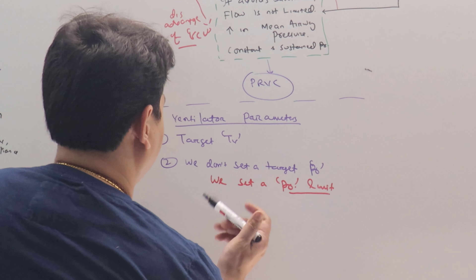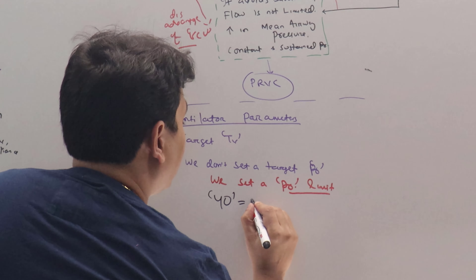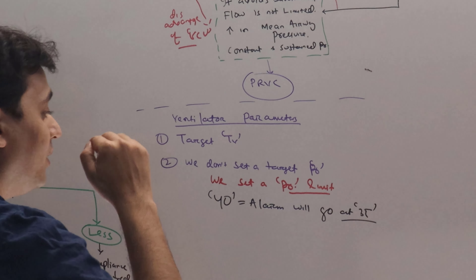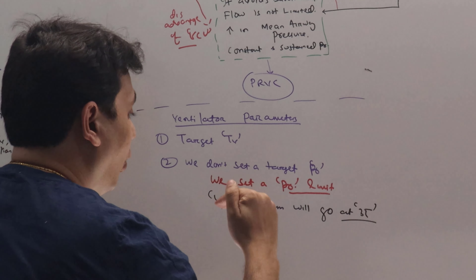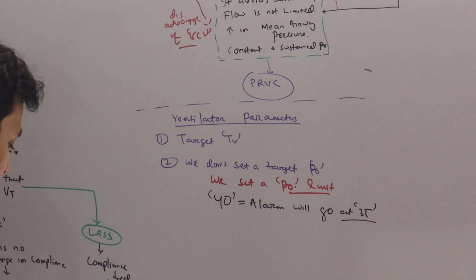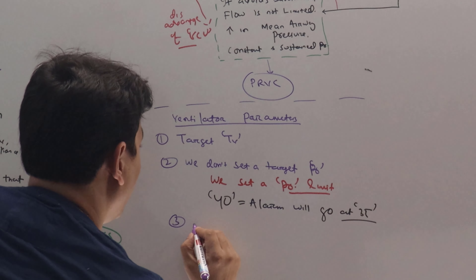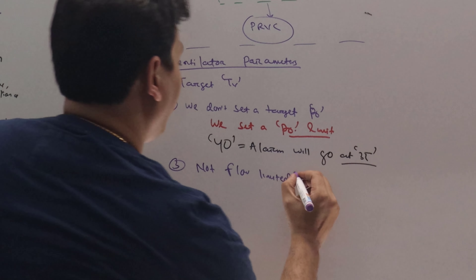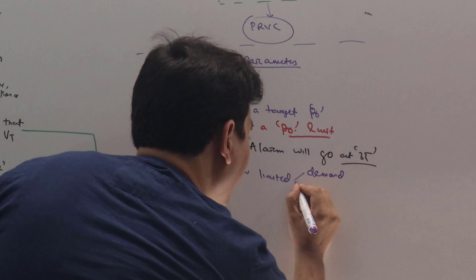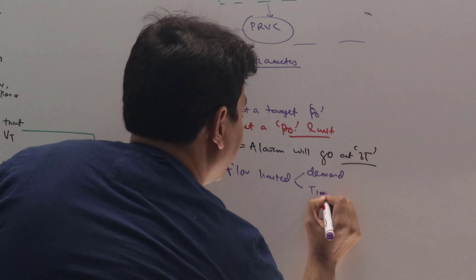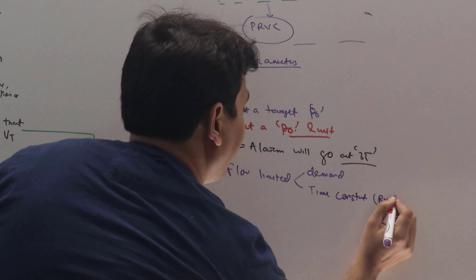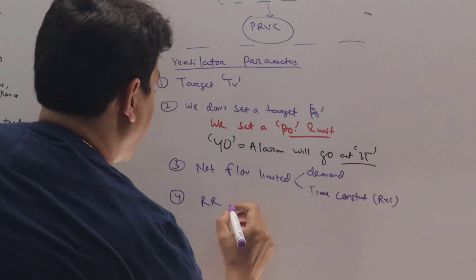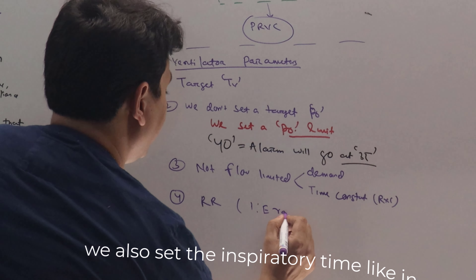For example, if we set a pressure limit of 40, then the alarm will go off at 35. This you have to remember: the safety limit is 5 mmHg below the pressure limit that you set. Number three, it is not flow limited — the flow will change depending upon the demand of the patient, or if the patient is sedated or paralyzed, it will depend upon the time constant, which is equal to resistance multiplied by compliance. Then we also set a respiratory rate, which will also decide our I:E ratio.